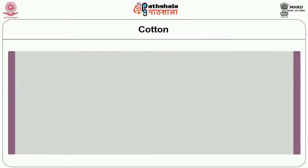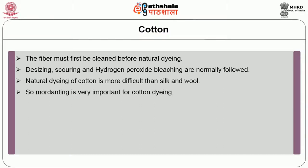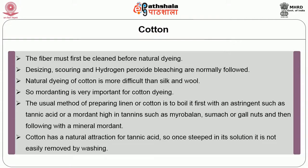First, let us see the techniques of dyeing cotton. The fibre must first be cleaned before natural dyeing — desizing, scouring and hydrogen peroxide bleaching are normally followed. Natural dyeing of cotton is more difficult than silk and wool. Cotton is not very porous and will not hold the dye stuff without complicated preparation, so mordanting is very important for cotton dyeing. The usual method is to boil it first with an astringent such as tannic acid or a mordant high in tannins such as myrobylen, sumach or gall nuts, and then follow with a mineral mordant.